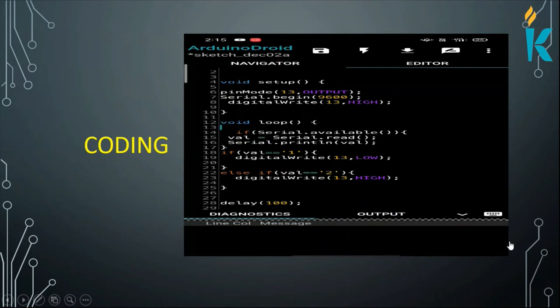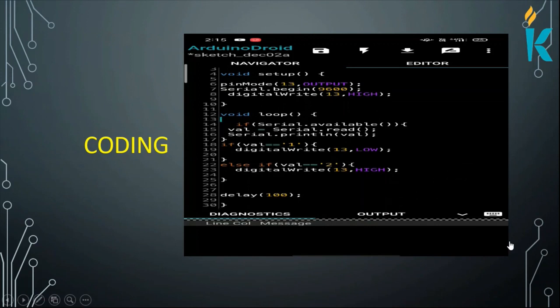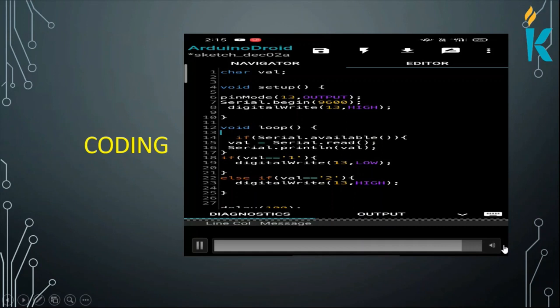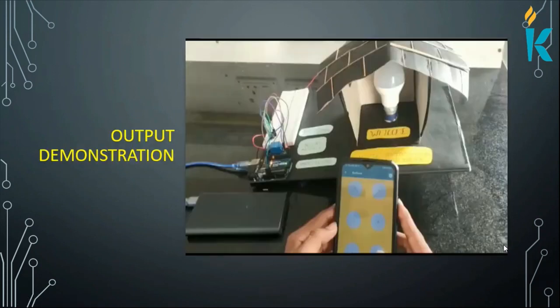you will upload the program. First, the bulb will be connected to the mobile application by using Bluetooth module. This is the icon of our Bluetooth application. First, the one button will be there.